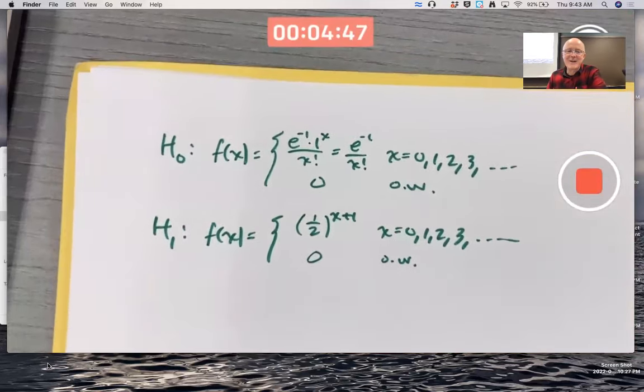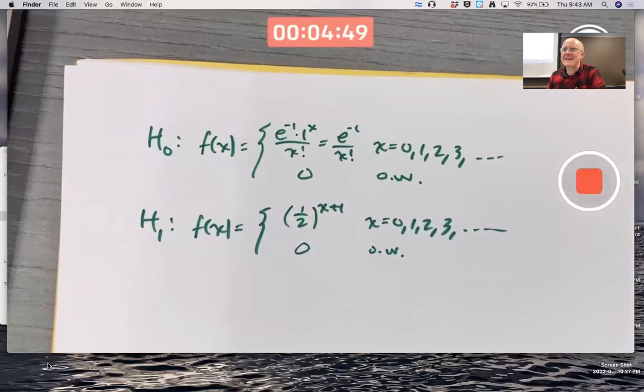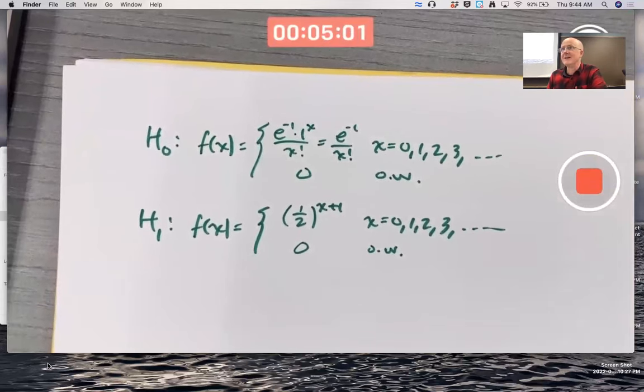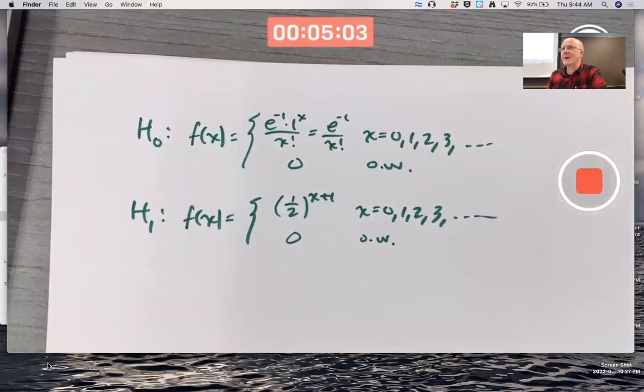So we want to think about doing this hypothesis test. How? Well, for a given alpha, the goal would be to try to find a critical region. Or maybe we decide on a critical region and figure out alpha. In fact, we're going to do the second thing because that's easier. We're going to decide on a critical region and find alpha, the probability of a type 1 error, the level of significance of the test.